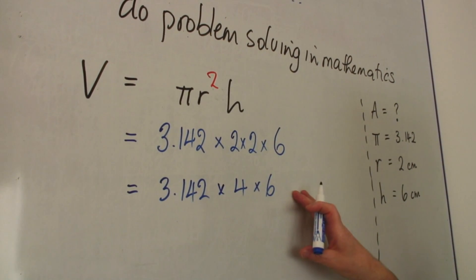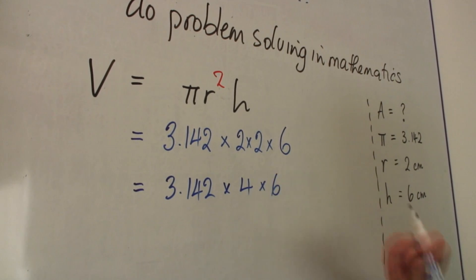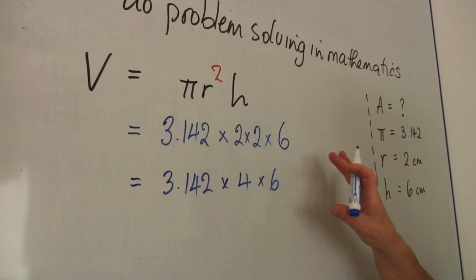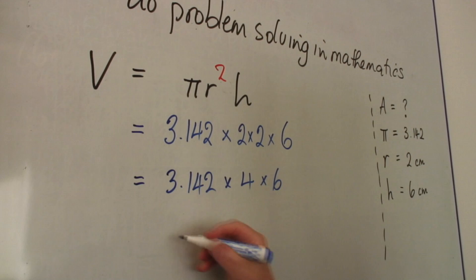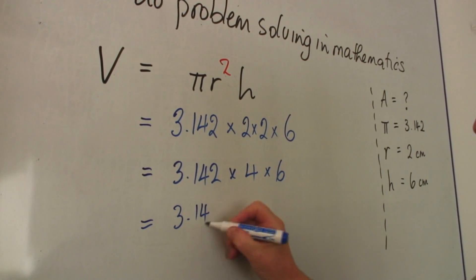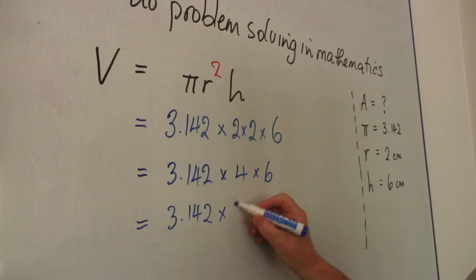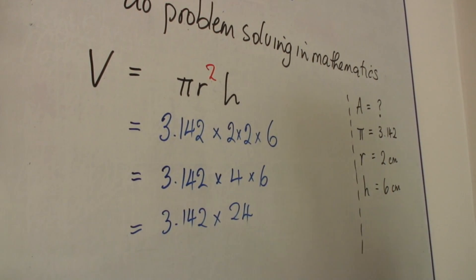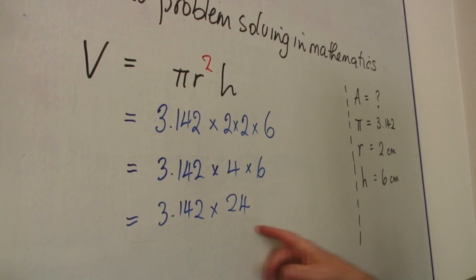The reason I'm doing it in this way is because these might not be simple 2 times 2. It might be complicated numbers. So write that stage. The final stage, 3.142, 4, 6 is a 24. And then work out this result.